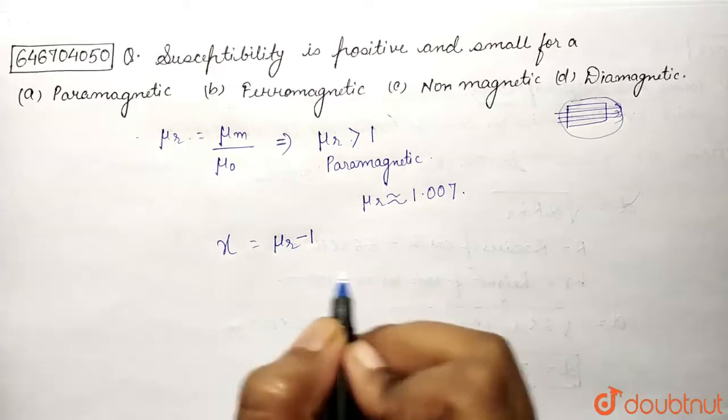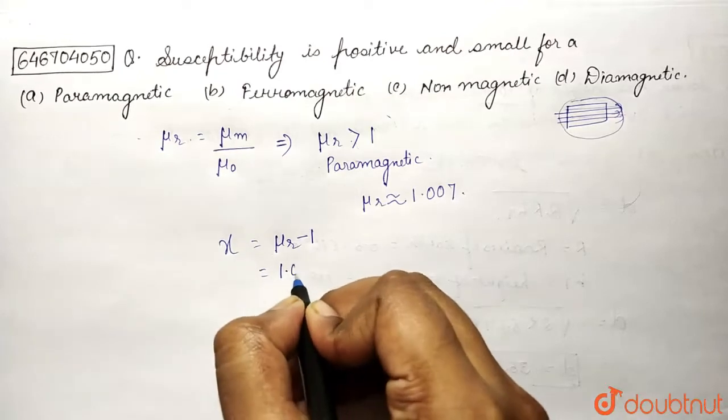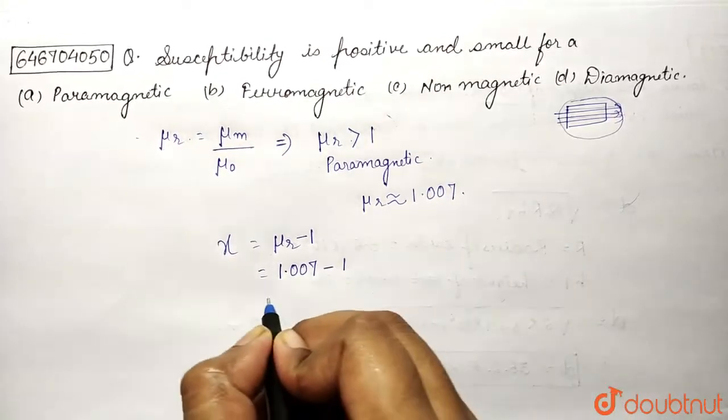relative permeability minus 1. Now for paramagnetic material, the relative permeability is nearly equal to this, right? Minus 1, so